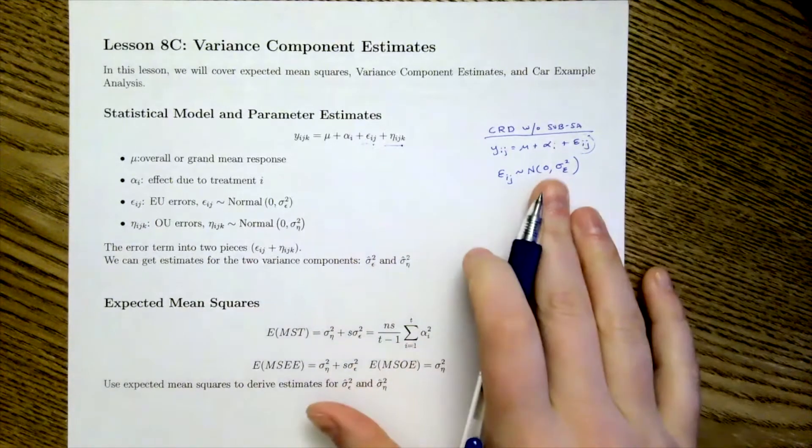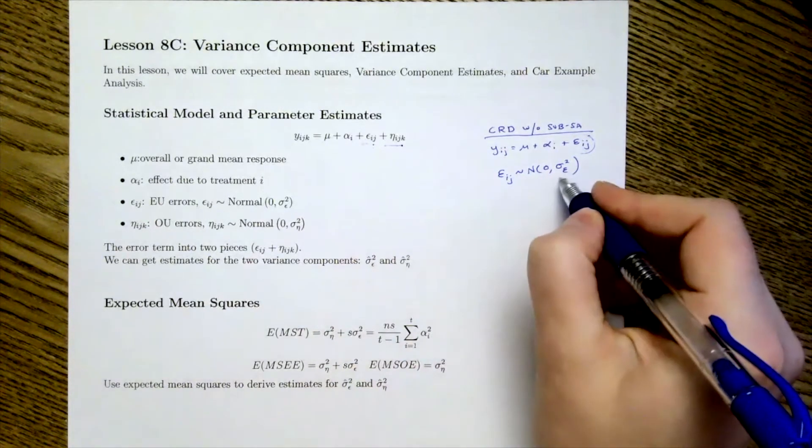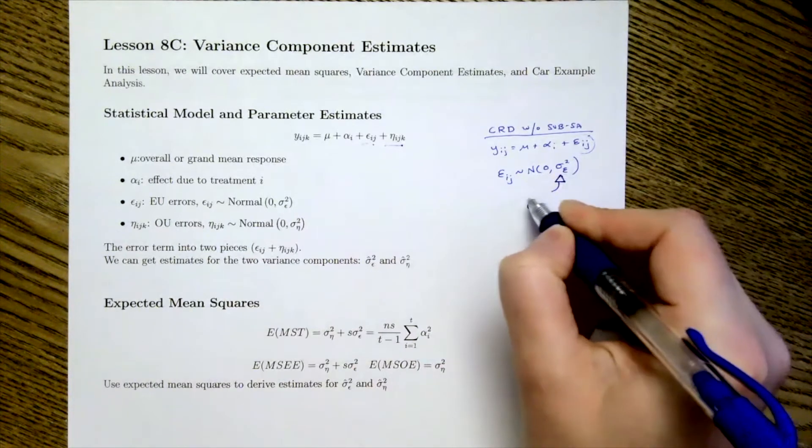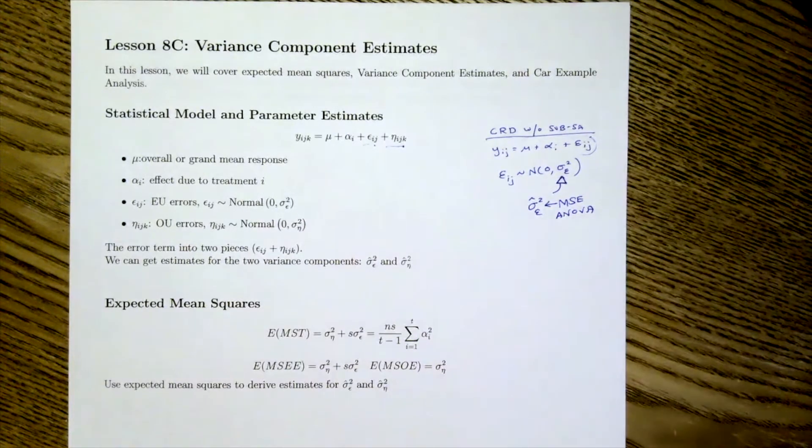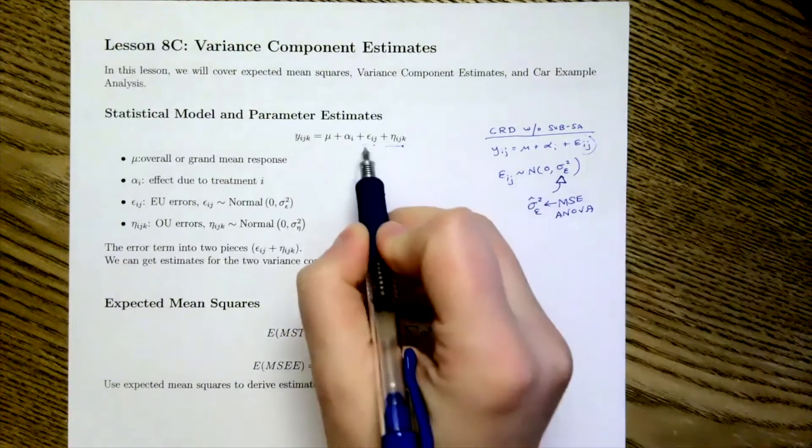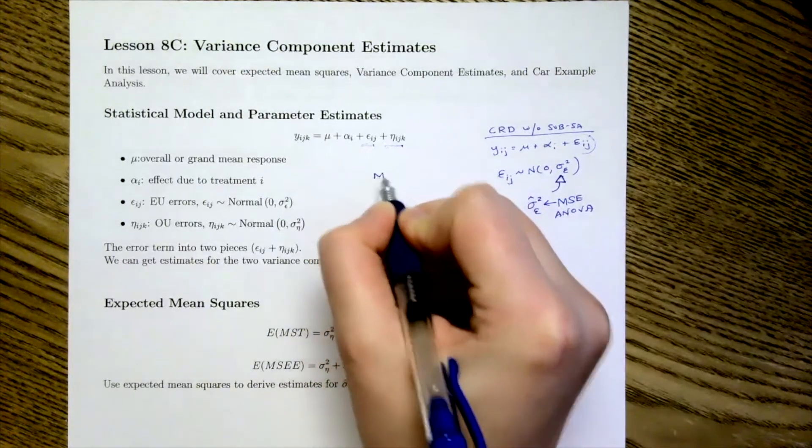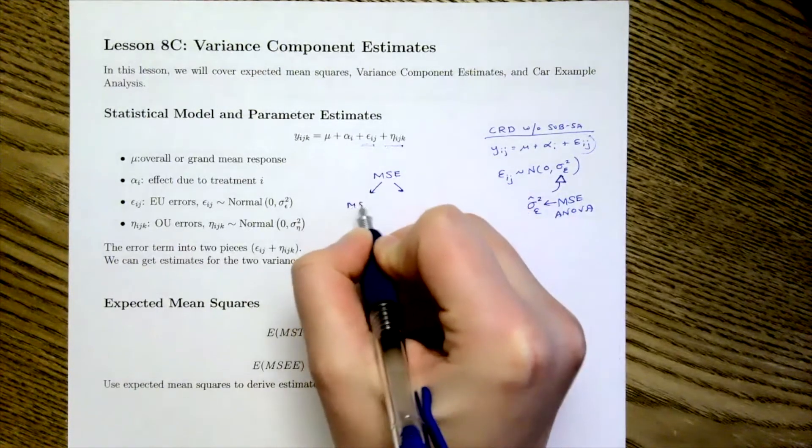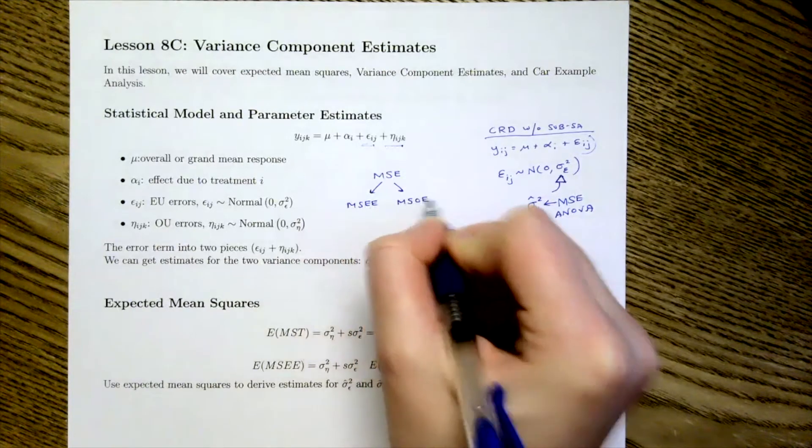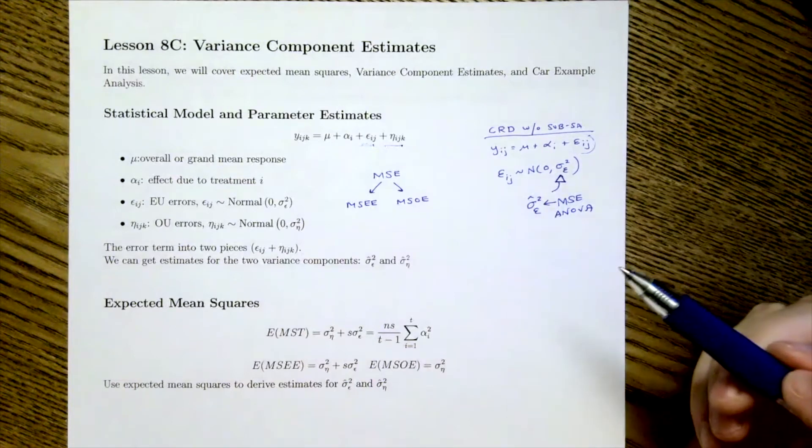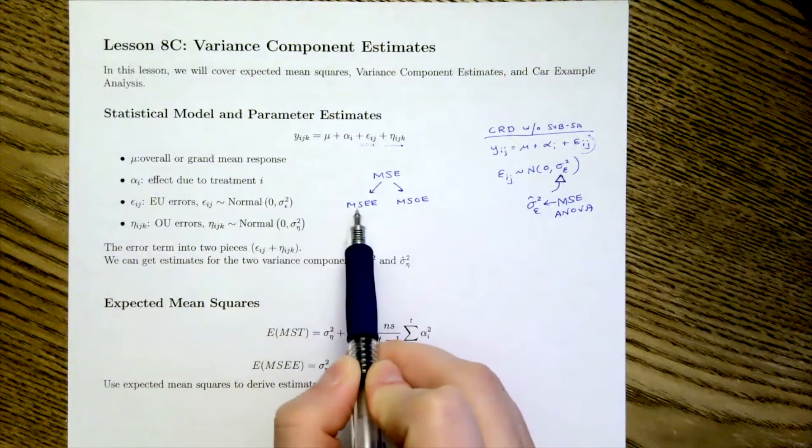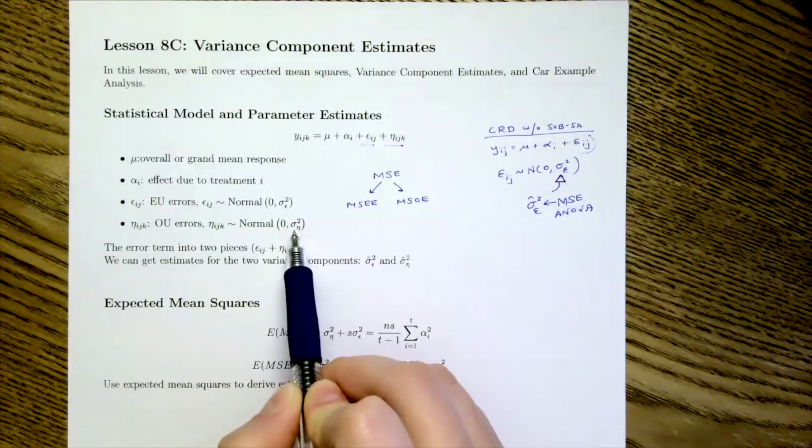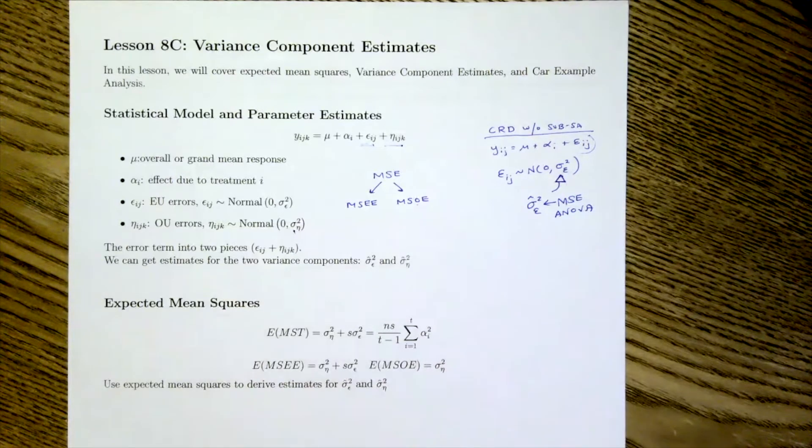In the past, when we were just working with the CRD, when we wanted to estimate this value, so sigma hat squared epsilon, we would simply just look at the MSE of the ANOVA table. But now our MSE is broken up into our MSE and MSOE with subsampling. And unfortunately, it's not as easy as saying the estimate for sigma epsilon is equal to MSE and the estimate of sigma eta is MSOE.